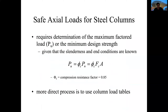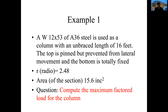The first formula we will study is the safe axial load — we need to determine the maximum load in the minimum design state of this column. When we know the slenderness ratio and the end conditions, we can calculate the safe load for that particular column. The safe load PU is calculated according to a compression resistance factor of 0.85 — a constant — multiplied by the critical stress FC and multiplied by the area of the section.